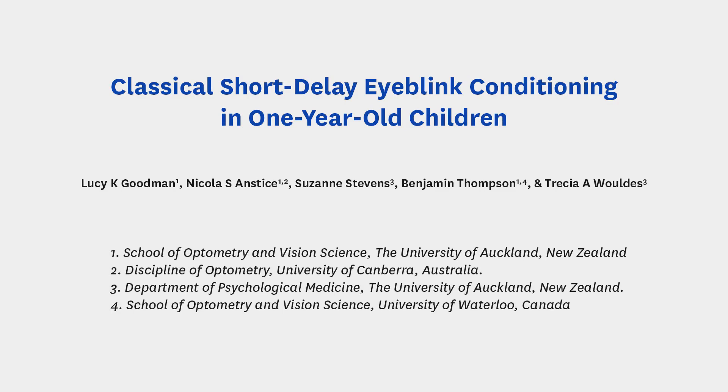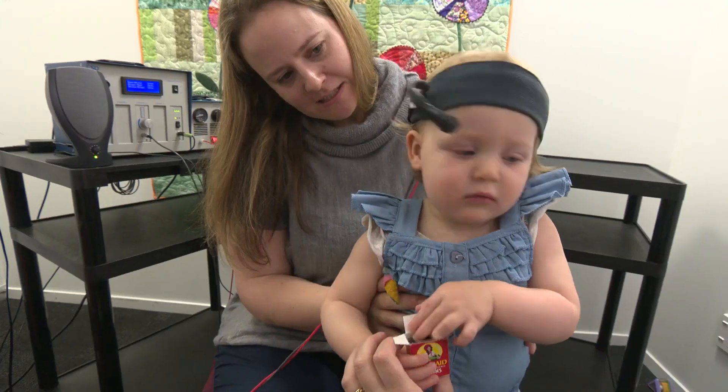The overall goal of this procedure is to assess associative learning in one-year-old children using eye-blink conditioning. The eye-blink conditioning paradigm is useful for detecting certain types of learning and memory deficits. For example, adults and children with fetal alcohol spectrum disorder have deficits in eye-blink conditioning, due to disruptions to their cerebellar circuitry.